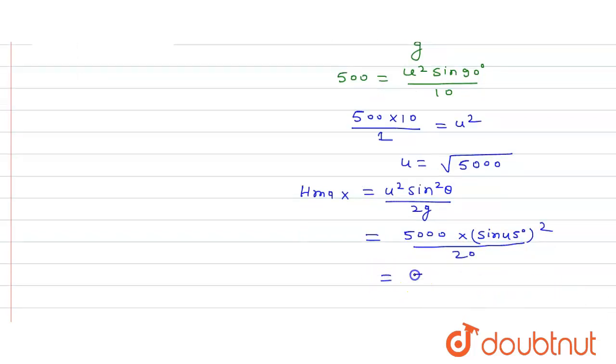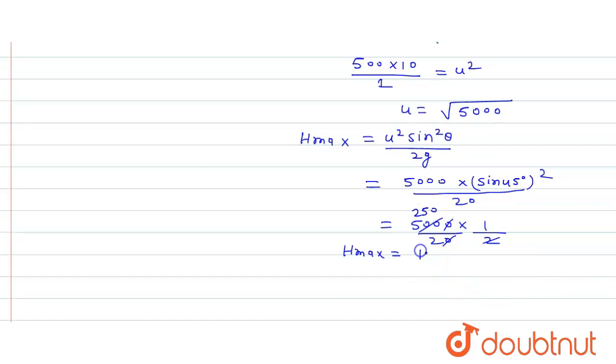So that is equal to 5000 into 1 upon 2 and this will be 20. So this cancels by 250 times. So H max is equal to 250 by 2, that is equal to 125 meters.